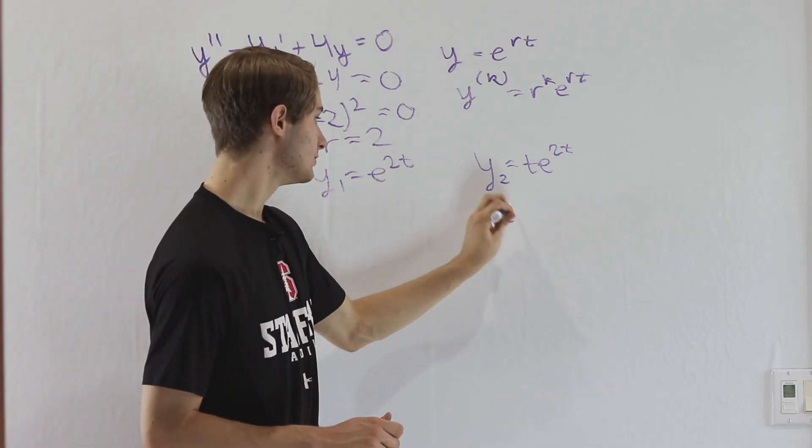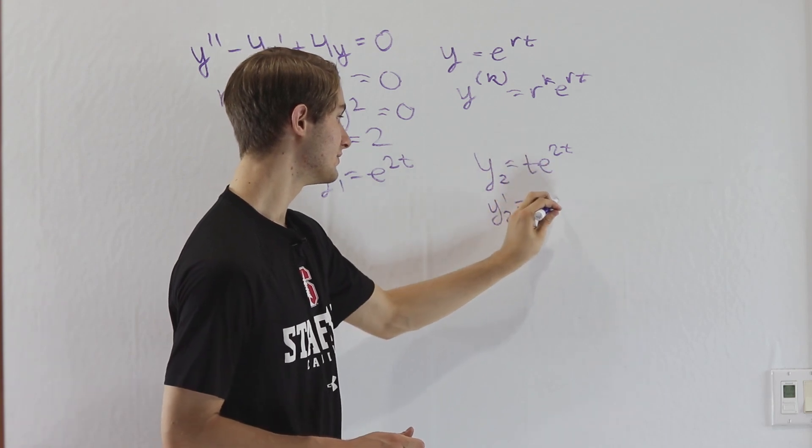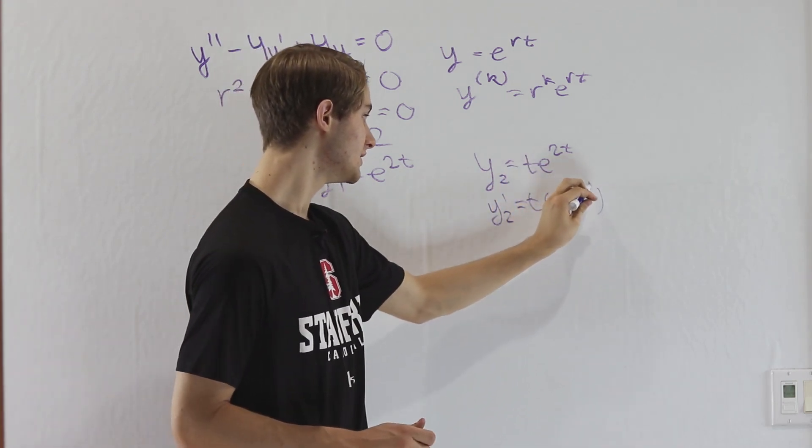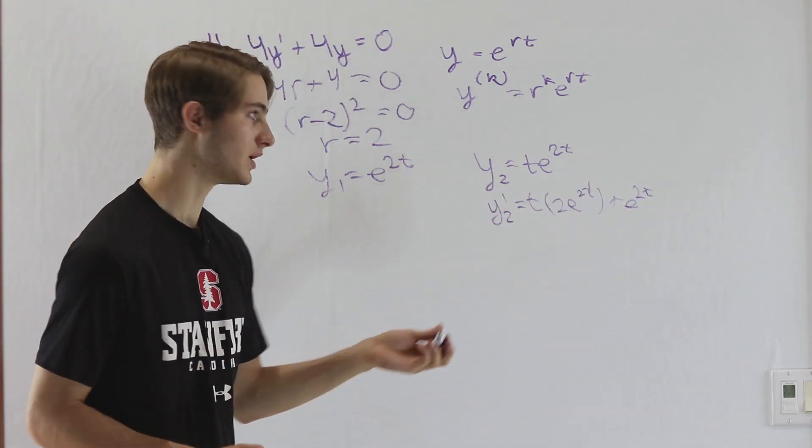We know y2 prime is going to be, by the product rule, first we have t and then the derivative of e to the 2t is 2 e to the 2t. Then if we do e to the 2t and then the derivative of t is 1.